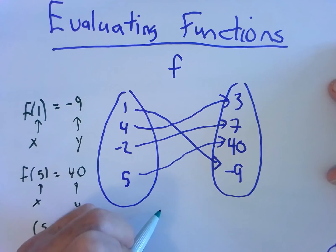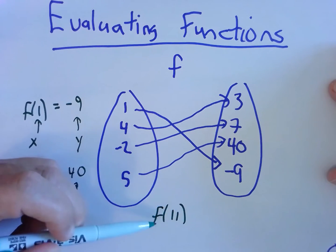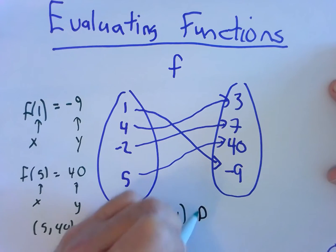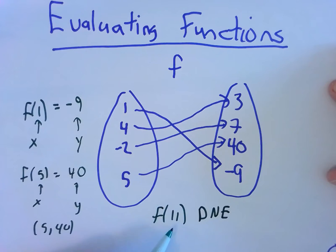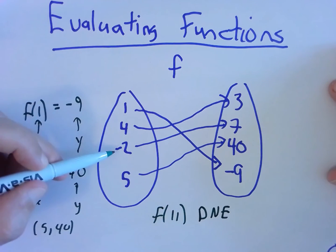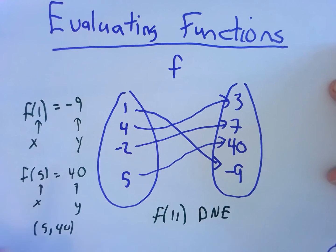Okay, what if I asked for f of 11? We look here, find when our input is... oh look, 11 is not here in my list. 11 is not one of my listed inputs. So this question has no answer. It does not exist. We could say DNE, does not exist, because 11 is not one of the allowed inputs, which we call domain. 11 is not an element of the domain.